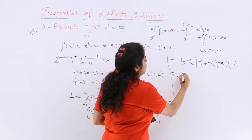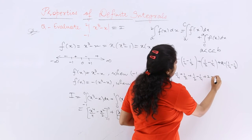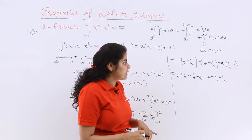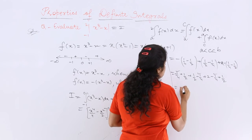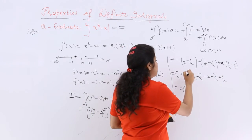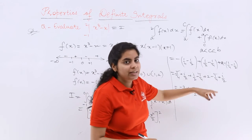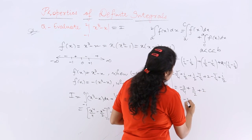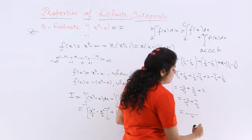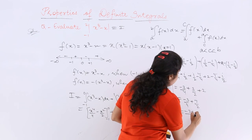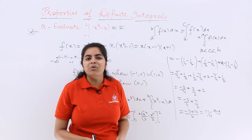Opening all the brackets: collecting the 1/4 terms — three of them with negative signs gives -3/4. Collecting the 1/2 terms — four of them with positive signs gives +3/2. Plus 2 from the third integral. So we have -3/4 + 3/2 + 2. Taking LCM of 4: (-3 + 6 + 8)/4 = 11/4. That is the answer — this is how you solve this type of question.